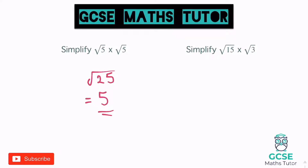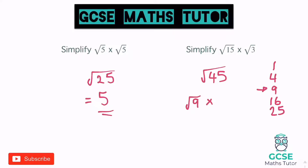On to the next one: simplify √15 times √3. 15 times 3 is 45, so that equals √45. But just like in our last video, we just have to check — does the square root of 45 actually simplify? Looking at our square numbers: 1, 4, 9, 16, 25 — hopefully you'll notice that 9 goes into 45. So I can write √45 as √9 multiplied by √5. The square root of 9 is 3, so it's 3 times √5, which we write as 3√5.